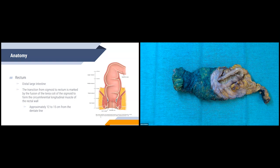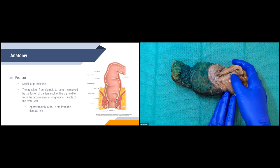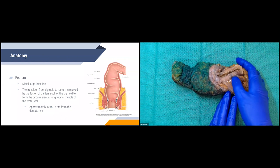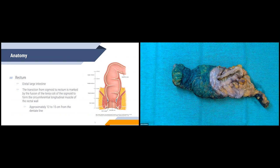The rectum is the distal portion of the large intestine. The transition between the sigmoid colon and the rectum is marked by the fusion of the teniae coli of the sigmoid to form a circumferential longitudinal muscle of the rectal wall. You can see here — it's a little difficult because I've cut through it — but you can see this longitudinal banding of muscle transitioning into a circumferential circular muscle. This happens at approximately 12 to 15 centimeters from the dentate line. The dentate line divides the anal canal into the upper two-thirds and lower one-third; it's also the squamous-columnar junction.